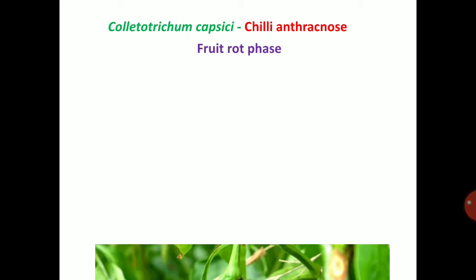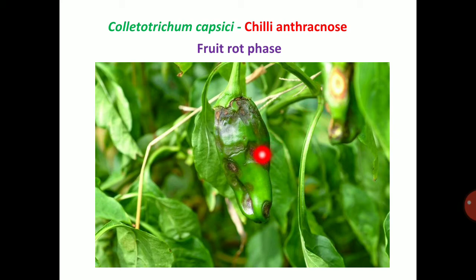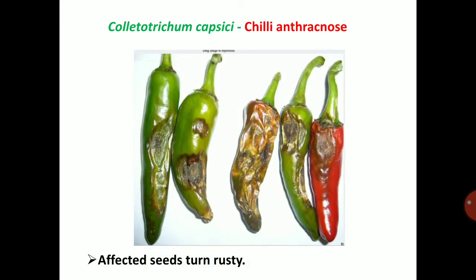Next is the fruit rot phase, which mainly infects the economic part of chili — the fruit. Small black circular spots appear initially on the skin of the fruit and spread later in the direction of the long axis. It produces a straw colored center with a dark margin, and especially a pitting symptom or sunken lesions. Affected seeds turn rusty.